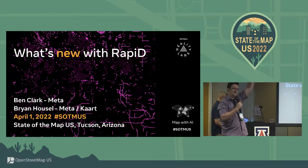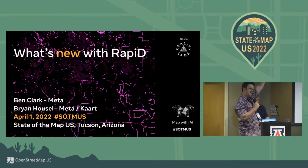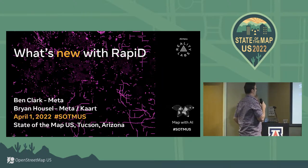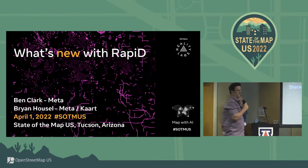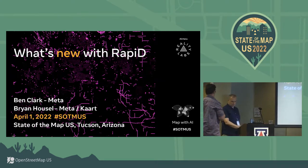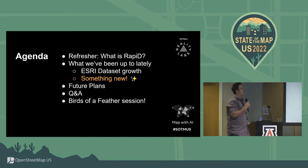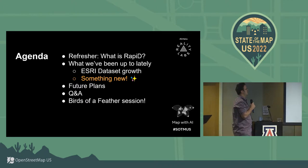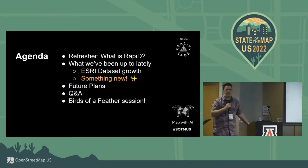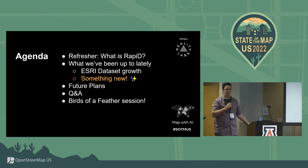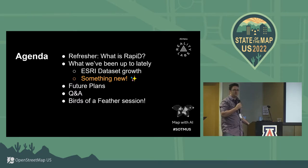Let's start with a show of hands — how many folks here have used ID? Keep them up if you've used Rapid. So we're here to talk about some datasets and also some new developments for a renderer. We'll do a brief refresher on Rapid, talk about datasets, share a brand new announcement, cover future plans, and Q&A. The Meta team will also be doing a Birds of a Feather session later this afternoon at 1:30 for in-depth technical questions about road conflation, daylight, or pedestrian features mapping.